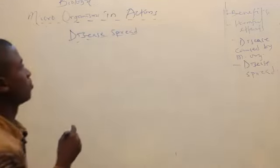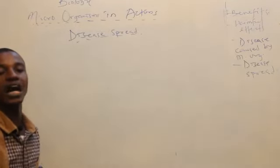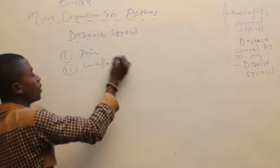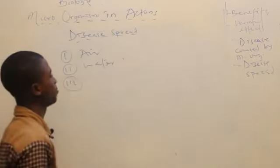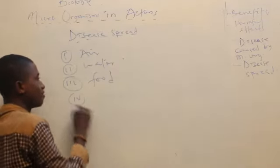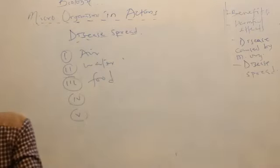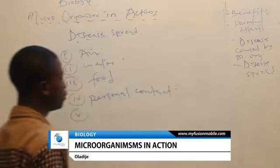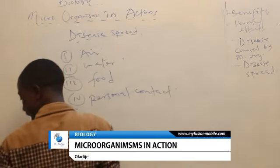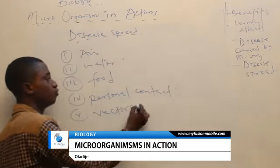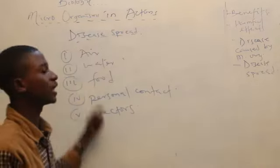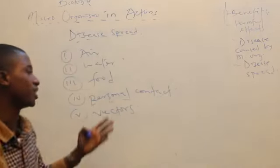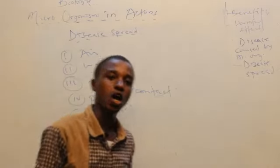Disease spread: diseases caused by microorganisms are spread through water — for example, cholera. They are also spread through food, through the air, and through personal contact with an infected person. There are also animal carriers of disease. Lastly, diseases are spread through vectors — carriers of disease. So you can get disease through the air, water, food, personal contact, or through vectors.